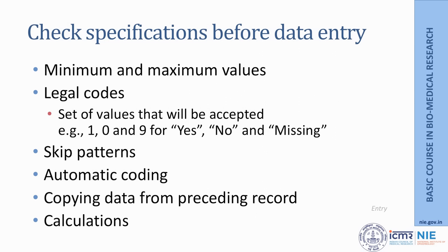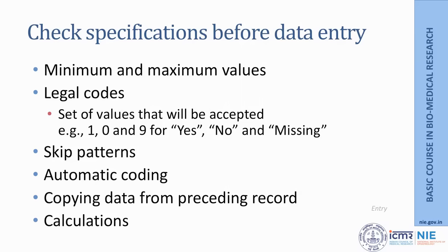There may be times when you need to copy data from a preceding record — for example, lab results that need to be carried forward to another section can get copied automatically. This can be specified in the database. Finally, some calculations can be automated — for example, you may collect height and weight data, and the database can automatically calculate BMI when you enter height and weight. These specifications are necessary before data entry is made.